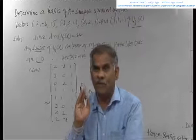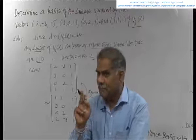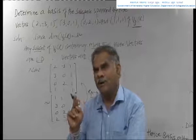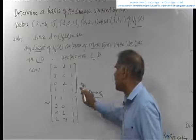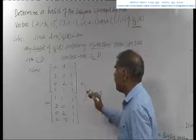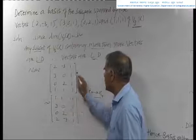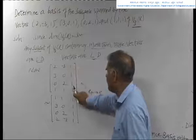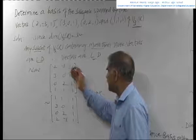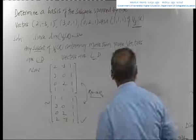In echelon form, the first row's first column element must be unity, with zeros below it. The second row's second column element must be non-zero, with zeros strictly below. The third row's third column element must be unity, with zeros below. Since the fourth row has a leading 1 already, we interchange the first and fourth rows for simplicity.